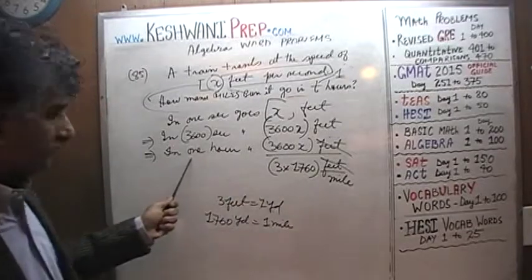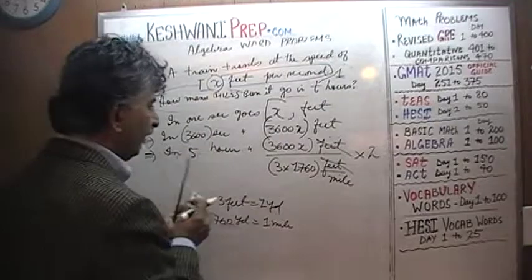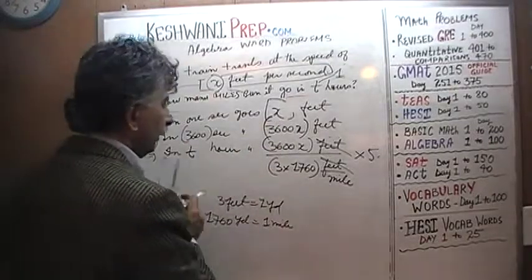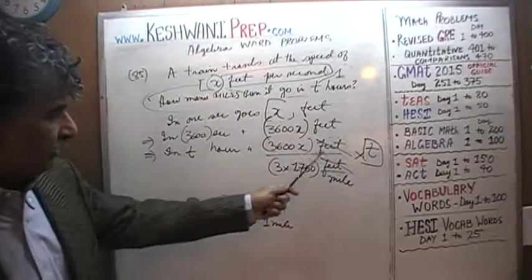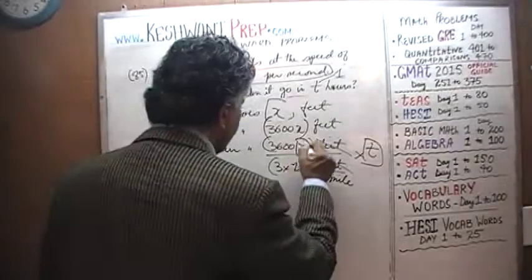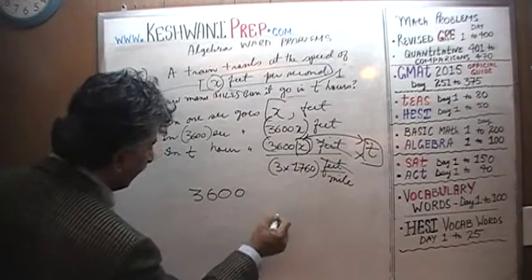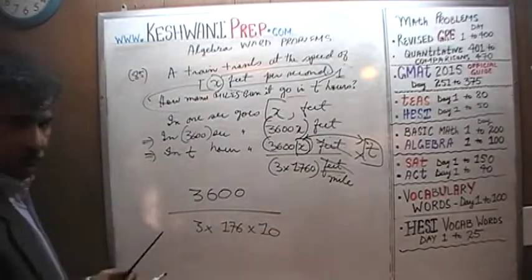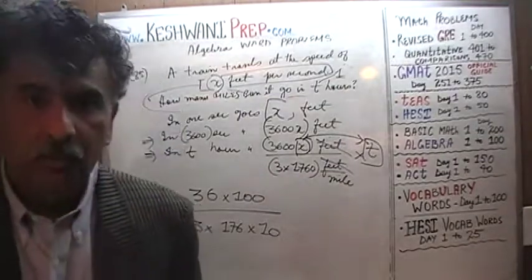Now we figure out: 3600 divided by 3 times 1760, and don't forget the x times t factor. I'll write 1760 as 176 times 10 and 3600 as 36 times 100 to make simplification easier. We see 36 on top and 3 at the bottom — dividing top and bottom by 3 gives 12. We know 176 is divisible by 4 because its last two digits, 76, are divisible by 4.